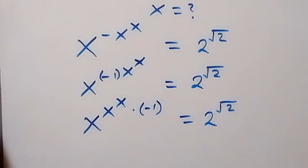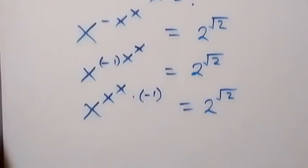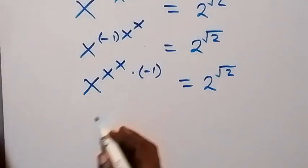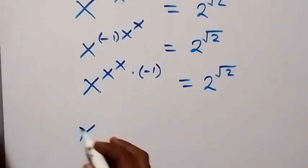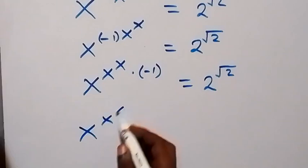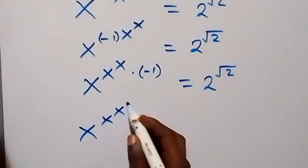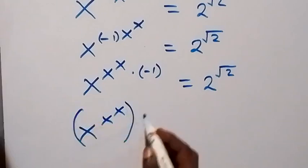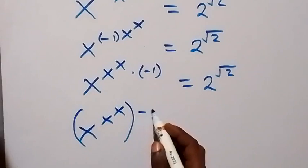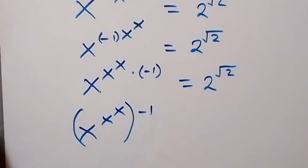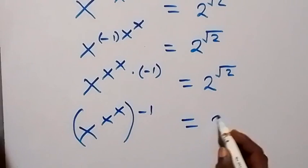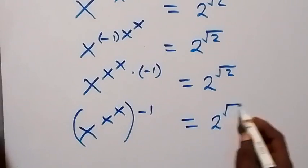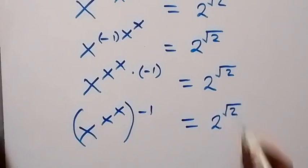On this side, we can put this in brackets, and we have x raised to power x, raised to power x, then raised to power minus 1 from the law of indices, which equals 2 raised to power root 2.